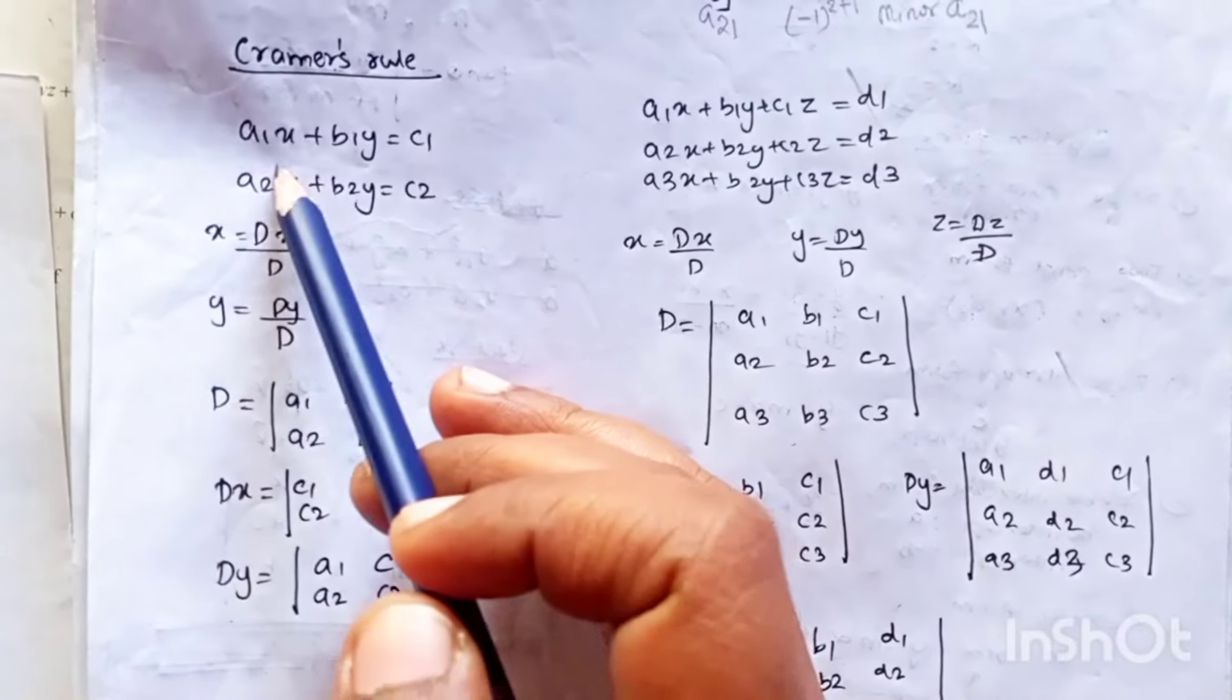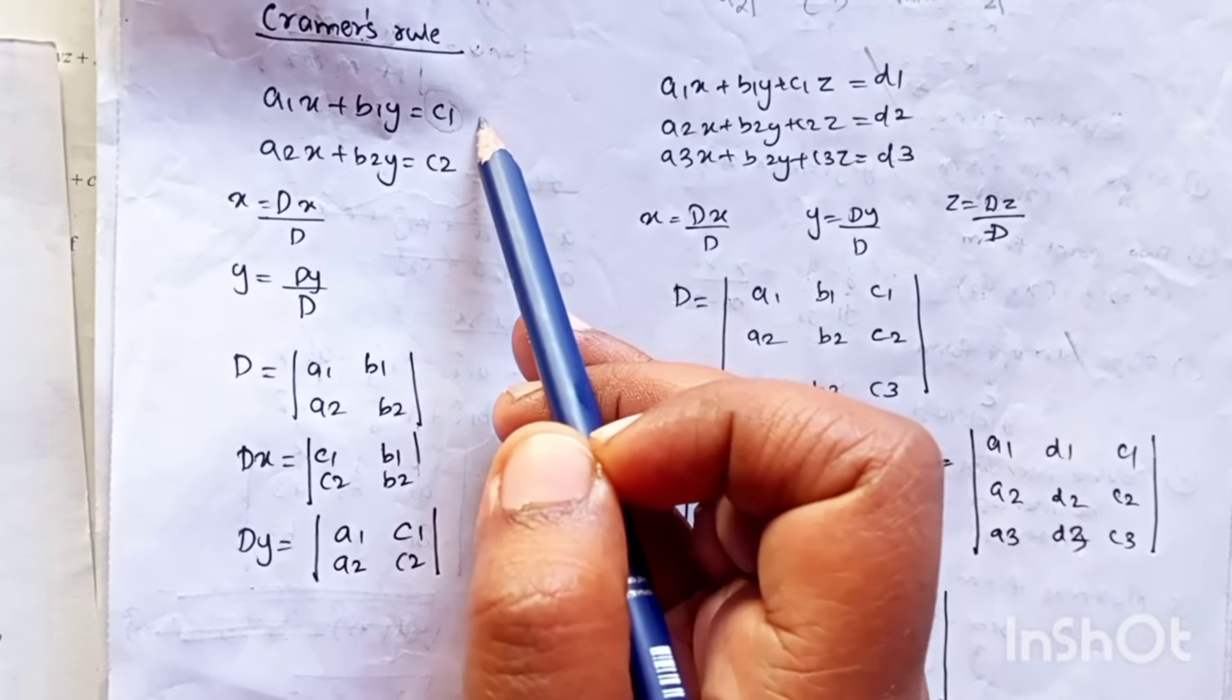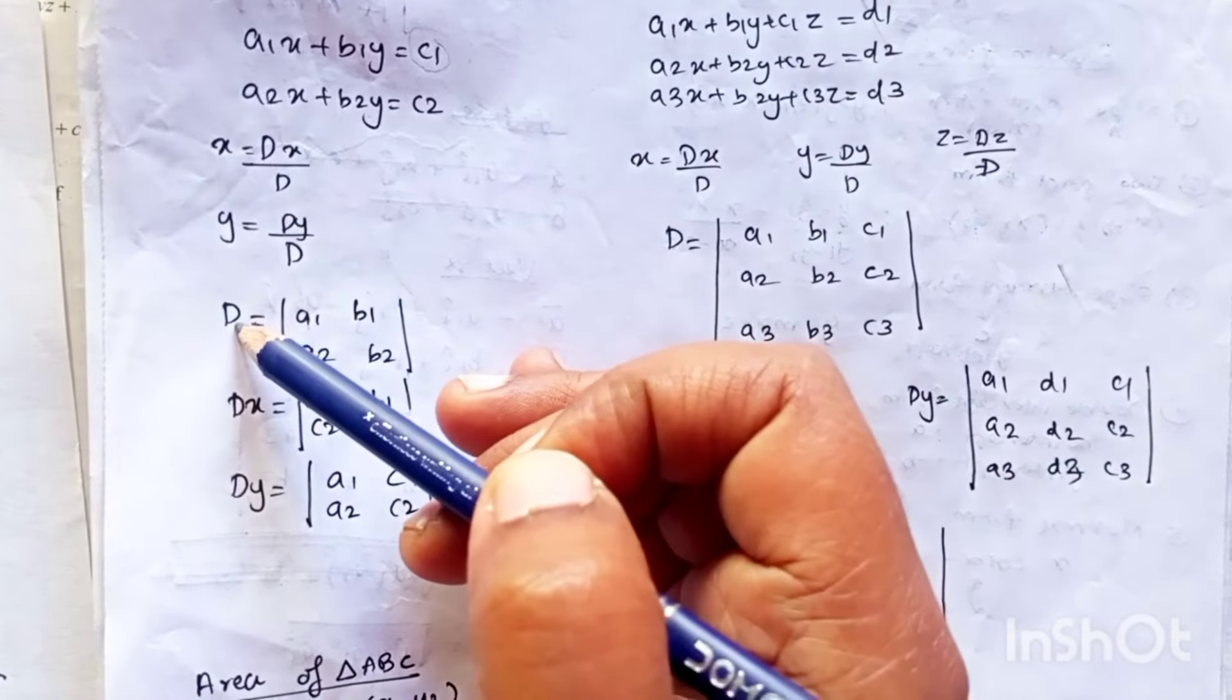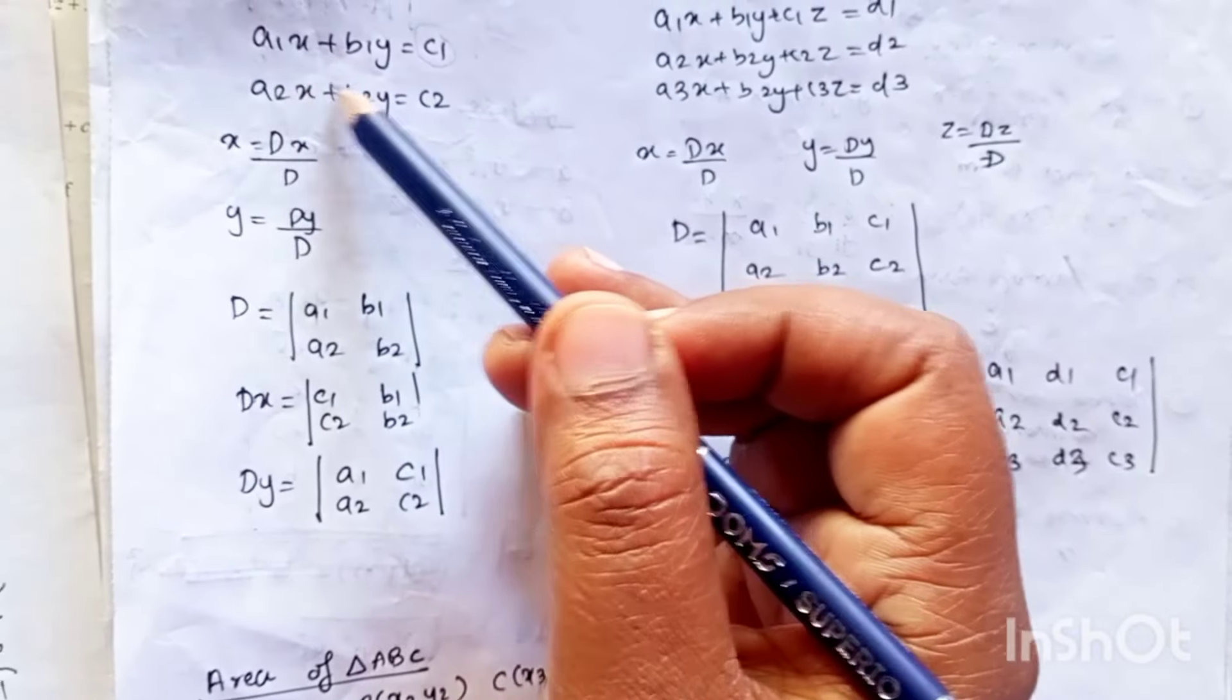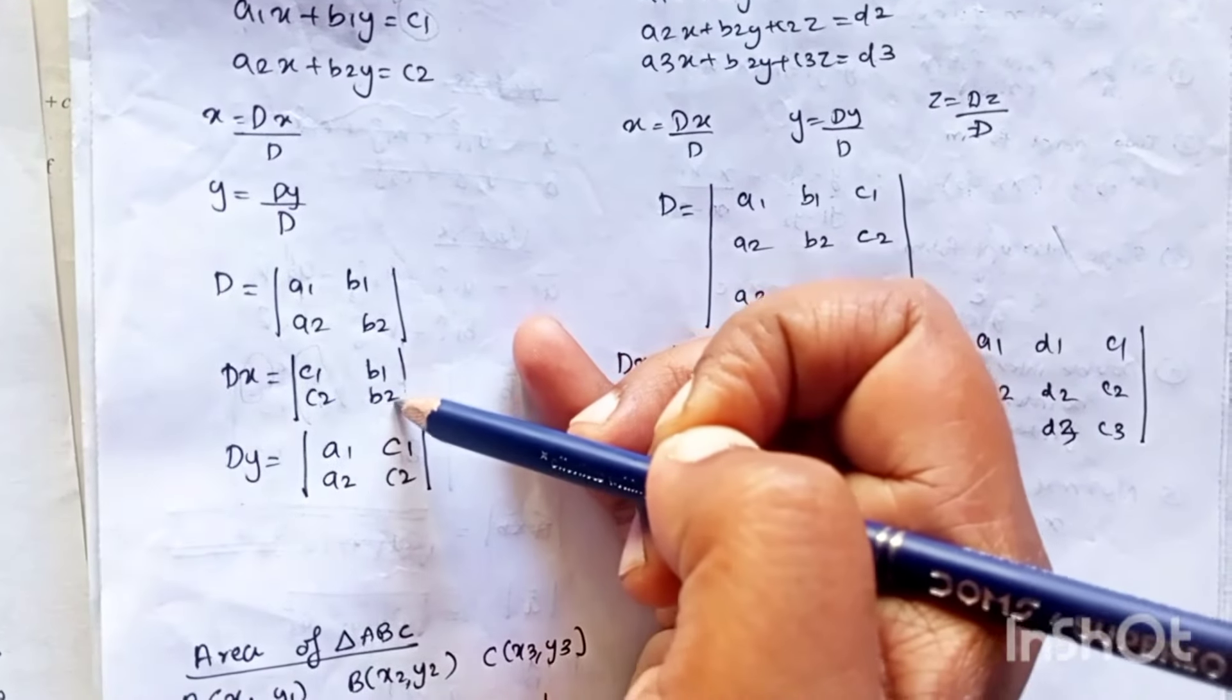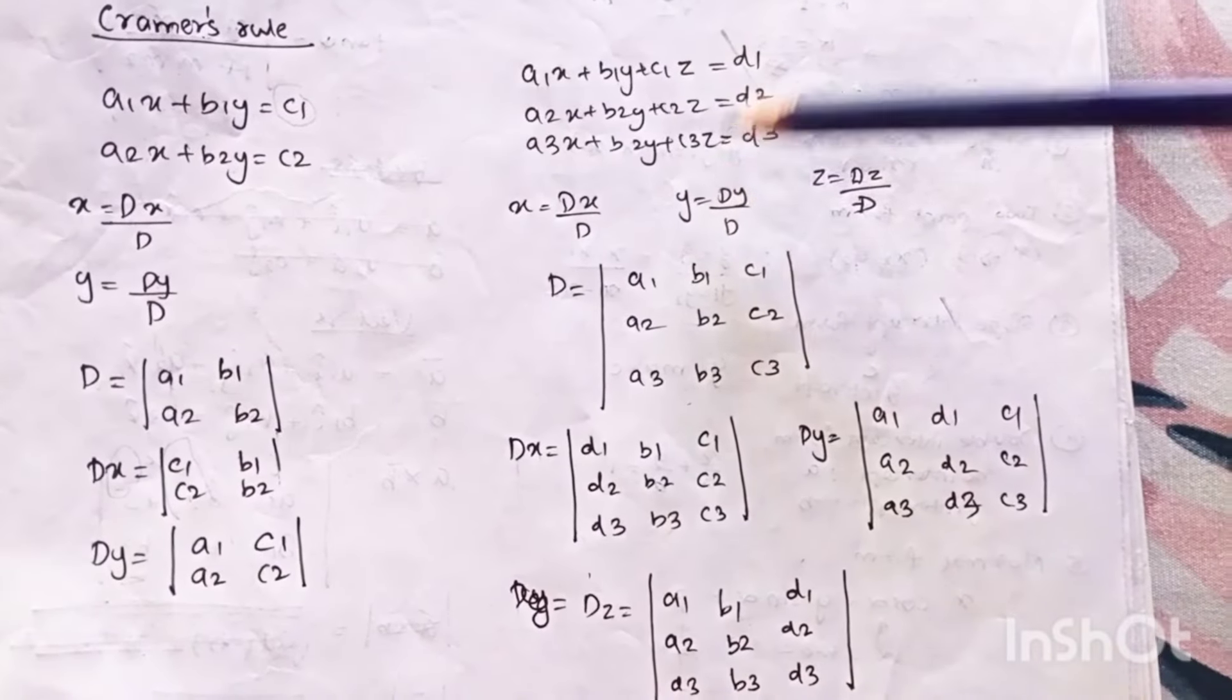Next topic is Cramer's rule. It is used to find the solution of equations. If it is an equation in two variables a1x plus b1y equal to c1 and a2x plus b2y equal to c2, then x is dx by d and y is dy by d. Now what is d? For d you have to take determinant of the coefficients of x and y, so a1 b1 a2 b2. For dx you have to substitute in the x the value of the constants. So c1 c2 b1 b2, similarly for y you will put the constants in y.